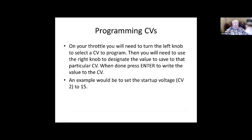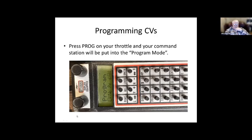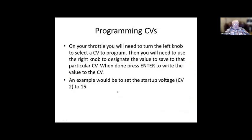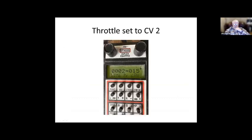On the throttle — in this case the DT402 — the left knob controls the CV and the right knob controls the value. The CV number is shown on the left side of the display, and the data or value is shown on the right side — it says 'DAT.' Once you have the program mode set, the CV number, and the data number where you want them, you press enter and that programs that particular CV. An example would be setting startup voltage to 15: CV 2 is startup voltage, and the value is 15, which is the amount of power you want to start the engine with. Then you'd press the enter key.